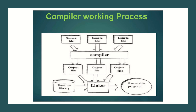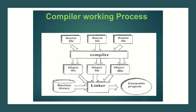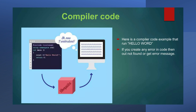The compiler takes the program written in high level language, also known as a source file or source program, then converts it into an object file, and this becomes the executable program after a runtime library. After compilation, the target code is ready and the compiler is no longer required, as it converts the source code into executable code in one go. This is the working process of a compiler.